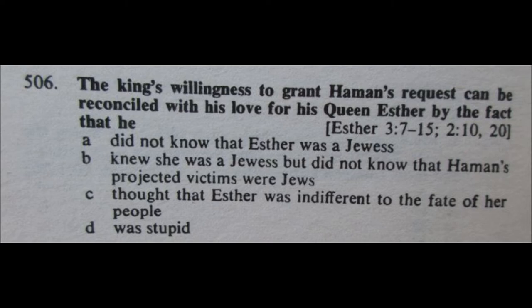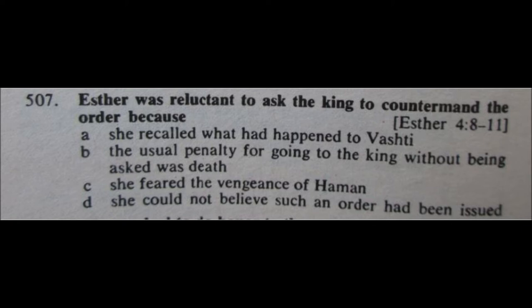Question number 507: Esther was reluctant to ask the king to countermand the order because A) she recalled what had happened to Vashti, B) the usual penalty for going to the king without being asked was death, C) she feared the vengeance of Haman, or D) she could not believe such an order had been issued. I remember this one, and it is definitely B, the usual penalty for going to the king without being asked was death. My answer is B.